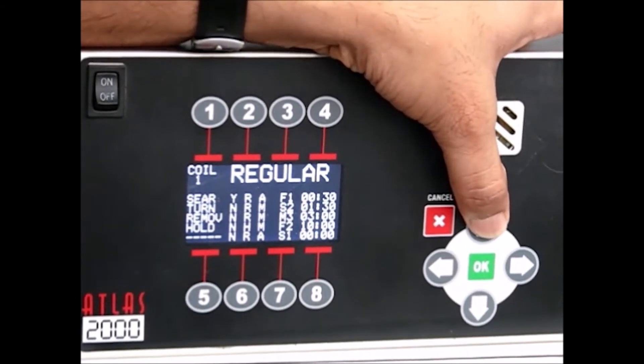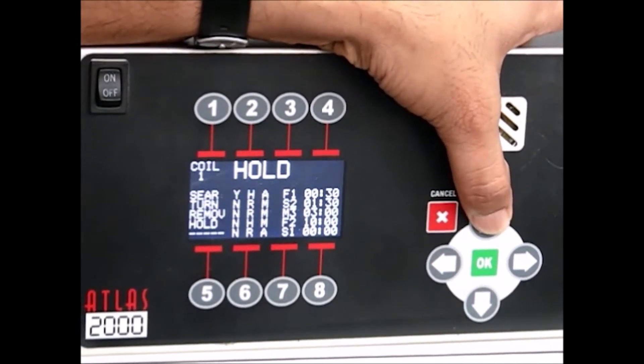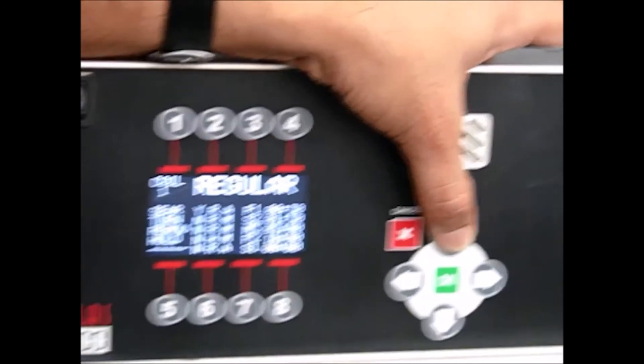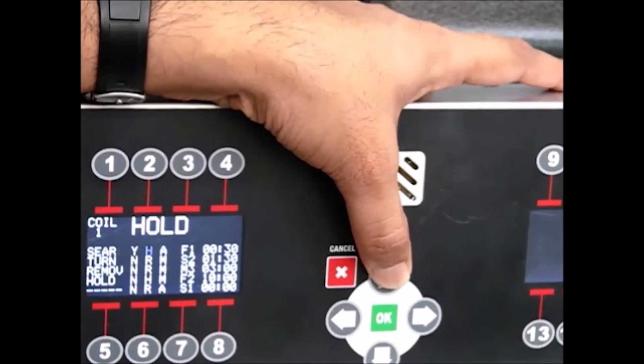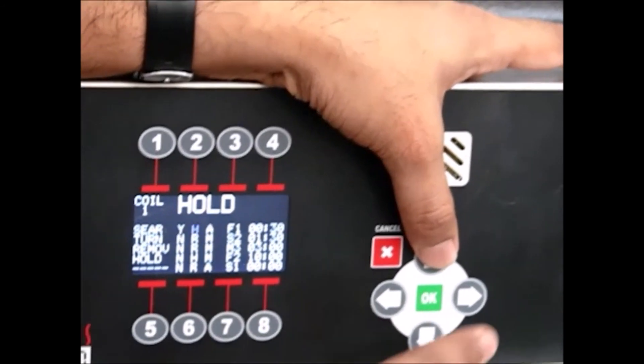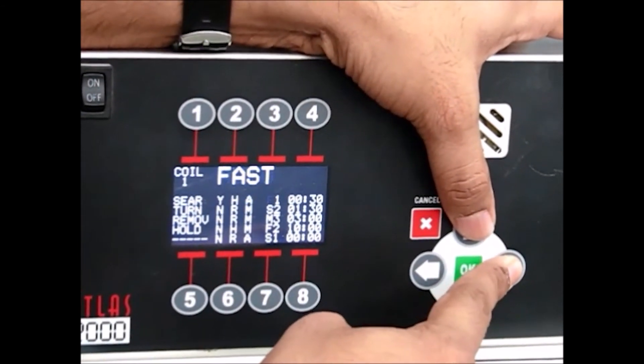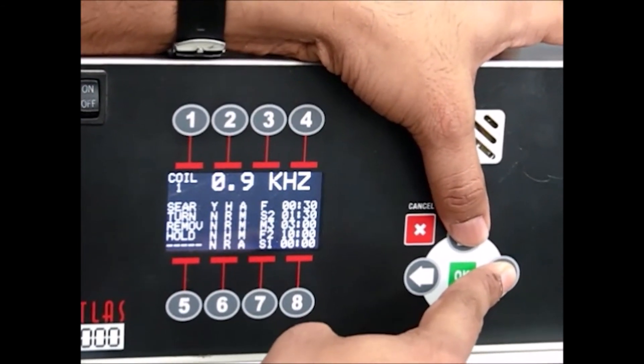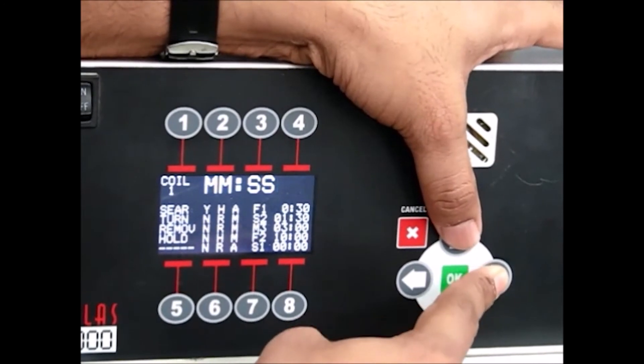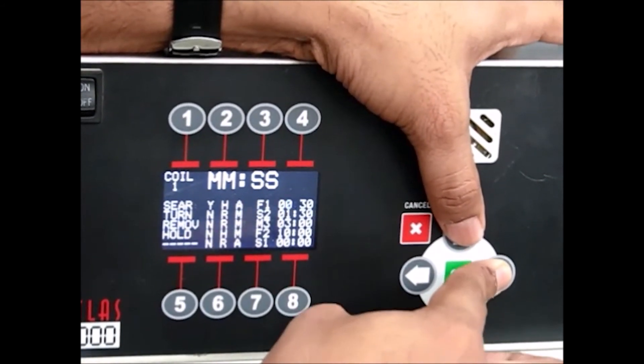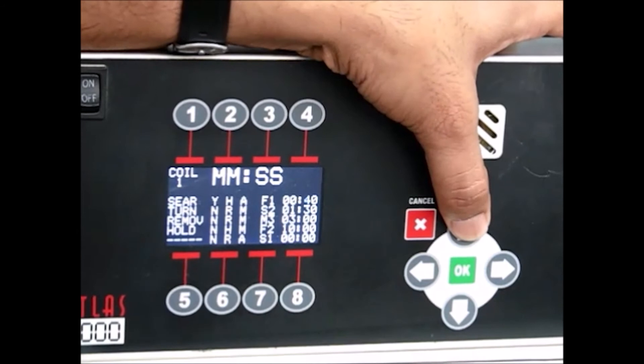Now we are going back to the pre-alarm and we are changing from hold to regular. Now we are moving to the next one which is frequency and then time. So like this you can set different parameters.